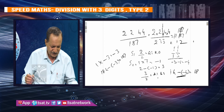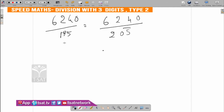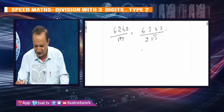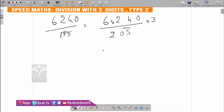If you see this: 6, 2, 4, 0 into 195. Okay, this is 6240 into 195. 195 is 200 minus 5. So 6240 divided by 195: next step is 3, 6, remainder. The next step is 3, 0.